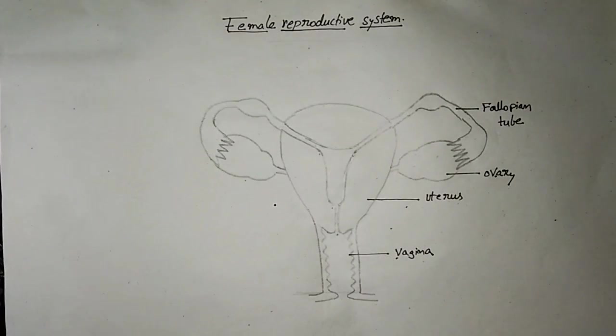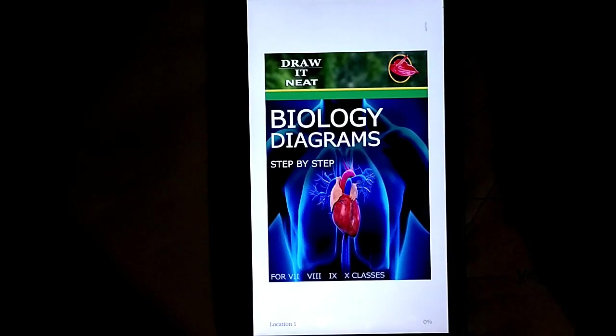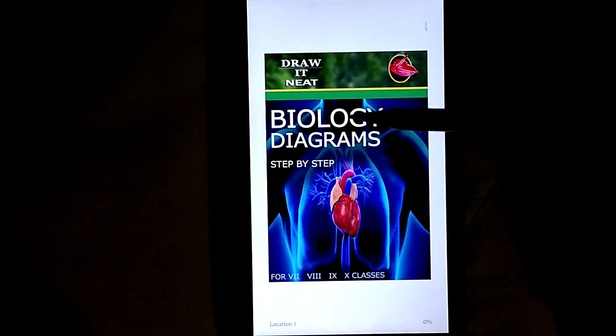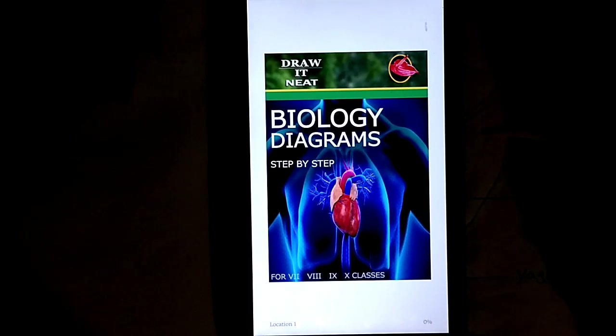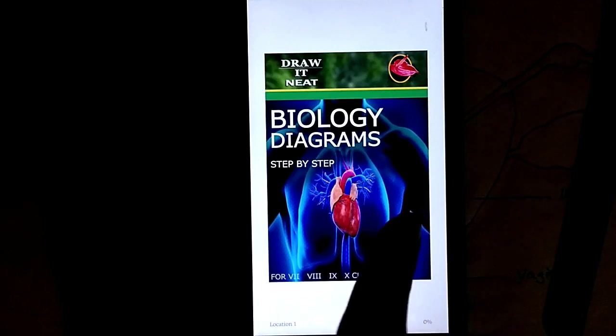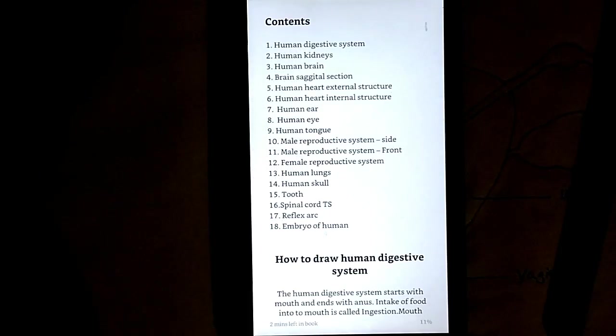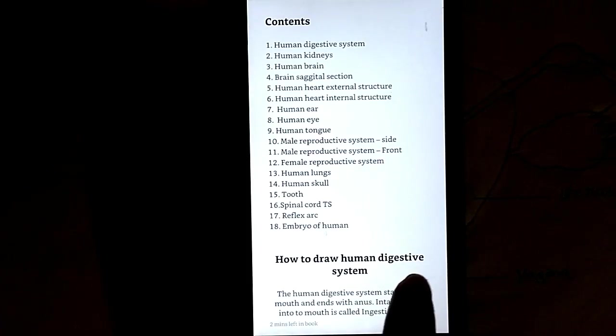Students, you can find many diagrams like this in an ebook called Draw It Neat. Friends, here you are seeing an ebook called Draw It Neat Biology Diagrams Step by Step. So this ebook is available on Amazon Kindle Store. You can either download it from the Amazon app also. Students, now let us see what is there in this ebook.